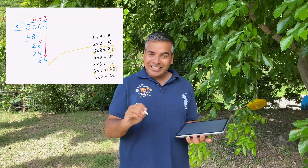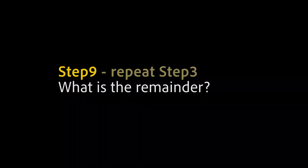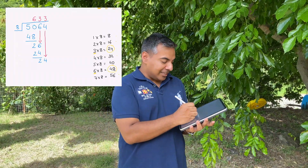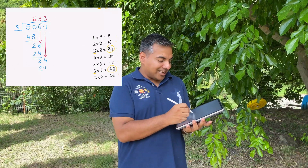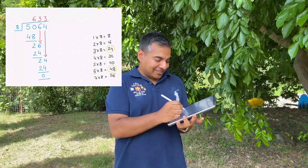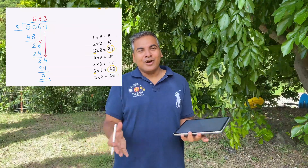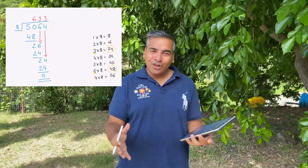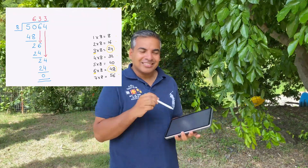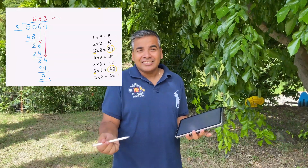Once that's done, we have one last step — step nine. We write twenty-four underneath the previous twenty-four and calculate the difference: twenty-four minus twenty-four equals zero. That means it's the end of the problem. The problem has been solved and the answer is at the top of the line: six, three, three — six hundred and thirty-three. So that's how long division works.